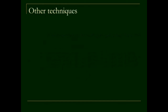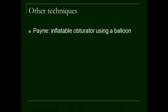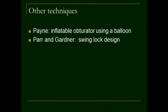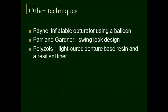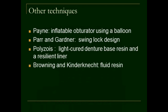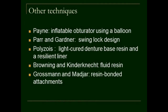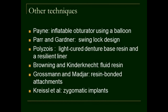Other techniques for fabricating hollow bulb obturators include: Paney (1965) described a technique using an inflatable obturator with a balloon; Parr and Gardner used a swing-lock design; Polysoys used light-cure denture-based resin and resilient liner; Browning and Kindernet used fluid resin; Grossman and Madjar used resin-bonded attachments for maxillary obturator retention. For extensive maxillary defects where retention may be compromised, craniofacial implants have been suggested for retention of the prosthesis. With improvements in digital technology, it is now possible to fabricate maxillary prostheses with greater accuracy using stereolithography and rapid prototyping.